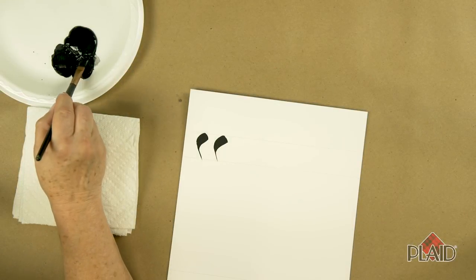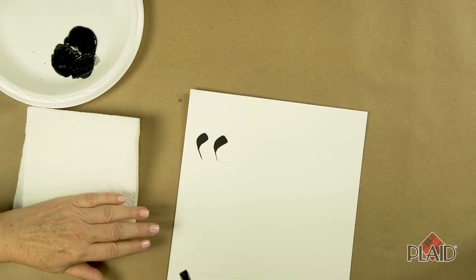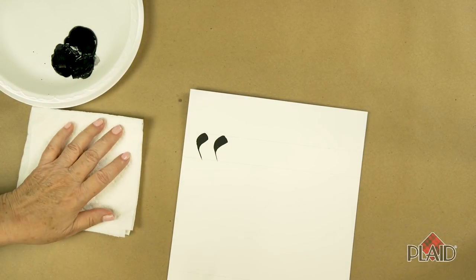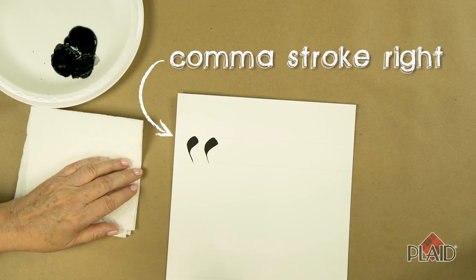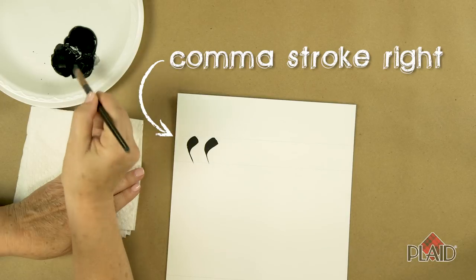Now that you've practiced how to do a brush stroke to the left, which is called a comma stroke, we're going to learn the comma stroke to the right. It's basically the same thing, the same stroke, but in reverse.